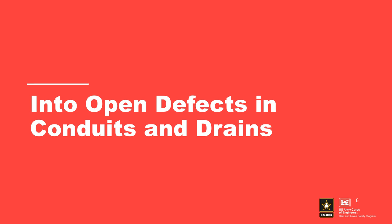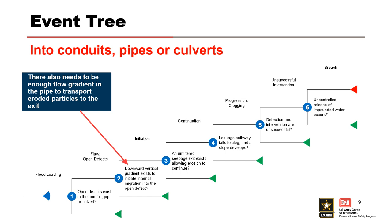Here's the event tree for evaluating internal migration into conduits, pipes, or culverts. Node 1 is the flaw node — an open defect exists in the conduit or pipe. Node 2 is initiation — a downward gradient is needed, and there must be enough water flow to transport eroded particles downstream. Node 3 is continuation — an unfiltered exit exists. Node 4 is progression — the leakage fails to clog and a stope develops. The 'holding a roof' progression node applies to concentrated leak erosion and is not evaluated here. Node 5 is intervention — detection and intervention are unsuccessful. Node 6 is breach — uncontrolled release of impounded water occurs.